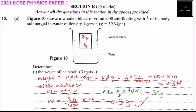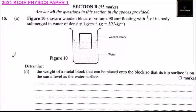Let's go to part A roman numeral 2 of the question. Same diagram setup. Determine the weight of a metal block that can be placed onto the block so that its top surface is on the same level as the water surface.